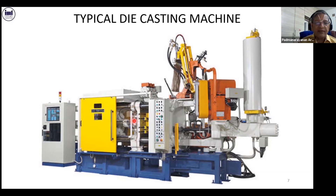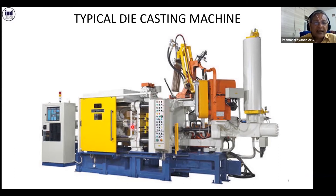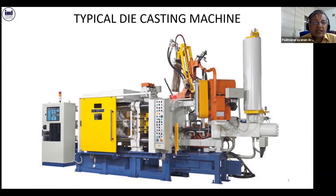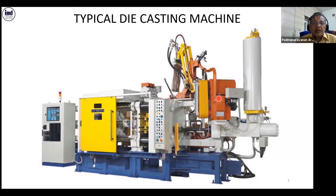This mechanism is done with a toggle clamp arrangement — why the toggle clamp, we will see in detail. These are the controls for the various functions. This is the safety guard — unless the safety guard closes, the cycle will not take place, meaning the plunger will not move; that is how the limit switch triggering mechanism is built. This unit is the water spray unit. On the back side there is the extractor unit, and the front side is the ladle for taking the material and pouring into the short sleeve.